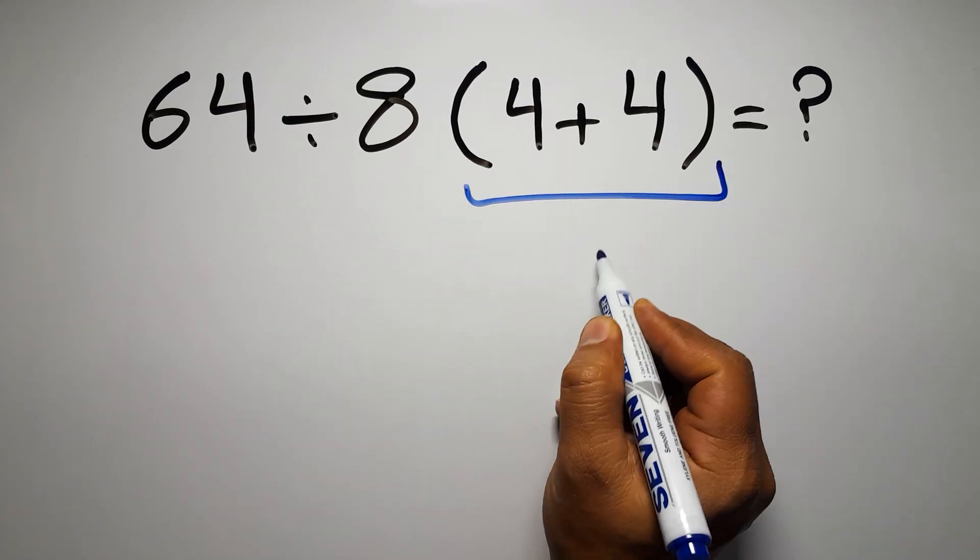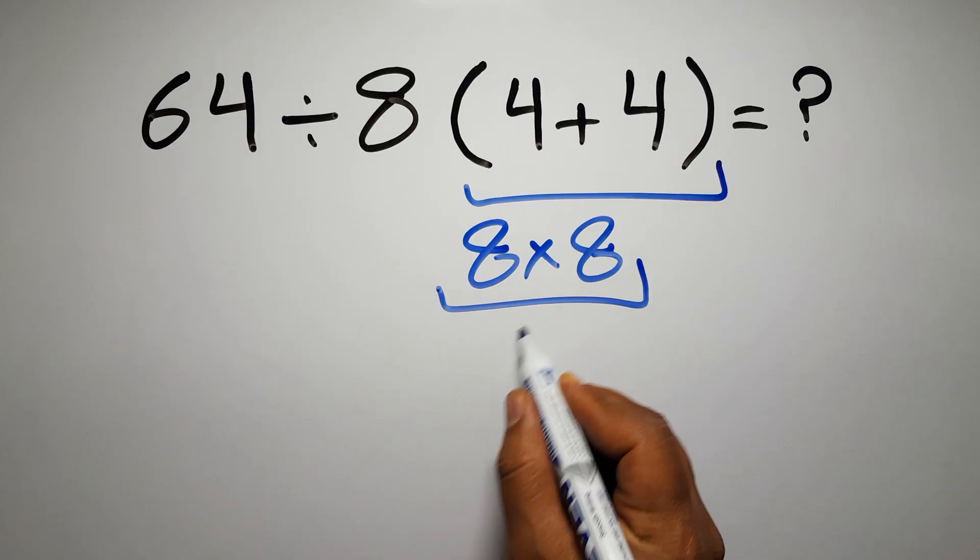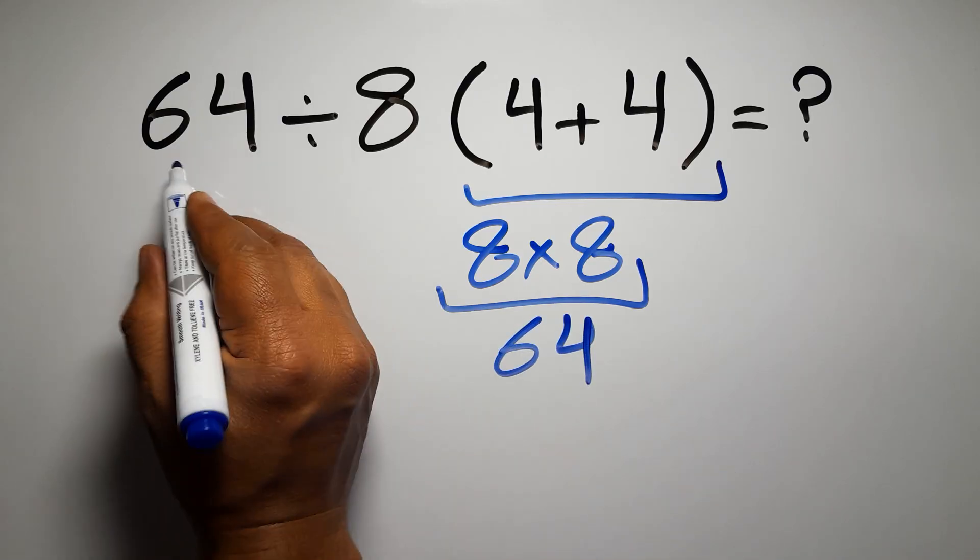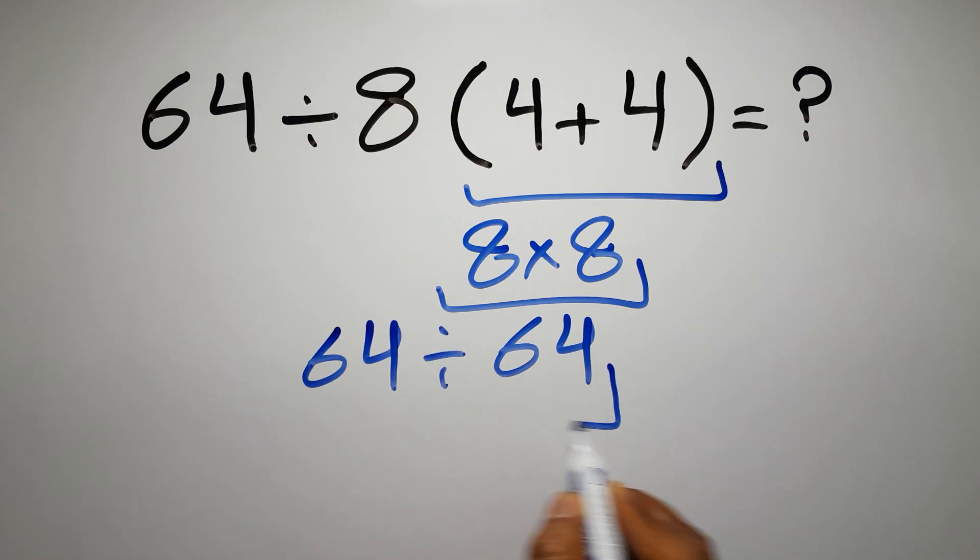4 plus 4 is just 8, so 8 times 8 gives us 64, and 64 divided by this 64 gives us just 1. But this answer is not correct.